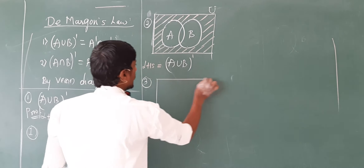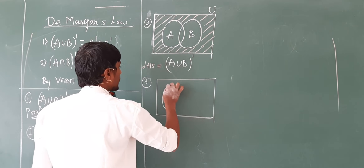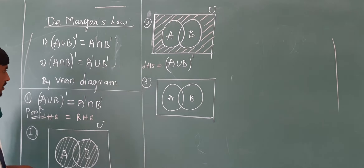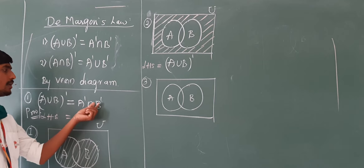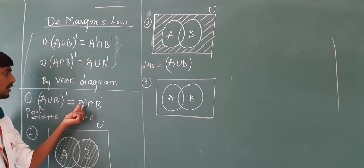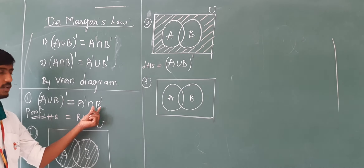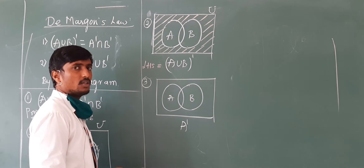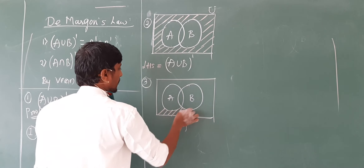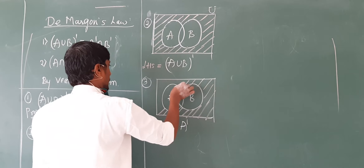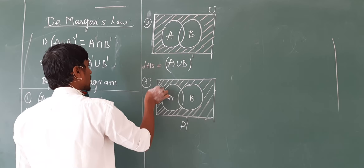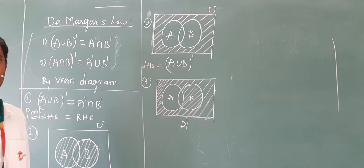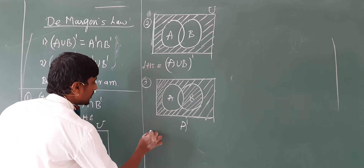For the third diagram, this is set A and this is set B. I want to calculate A'∩B', so I need A' and B' first. A complement means the elements which are present in U but not contained in A. There are some elements also present in B, so this is our whole collection for A complement.